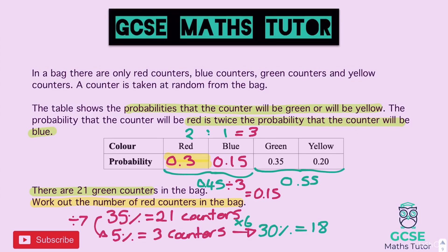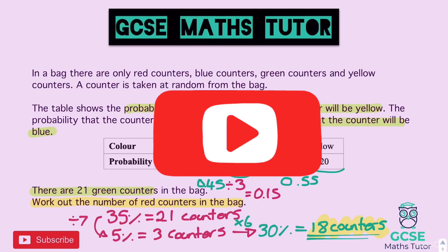So 30% = 3 × 6 = 18 counters. There are 18 red counters in the bag. With a calculator you could also do 21 ÷ 35 to get 1%, then × 30, which also gives 18. That's the end of probability from a table — hopefully you found that useful. Please like, comment, subscribe, and I'll see you for the next one.